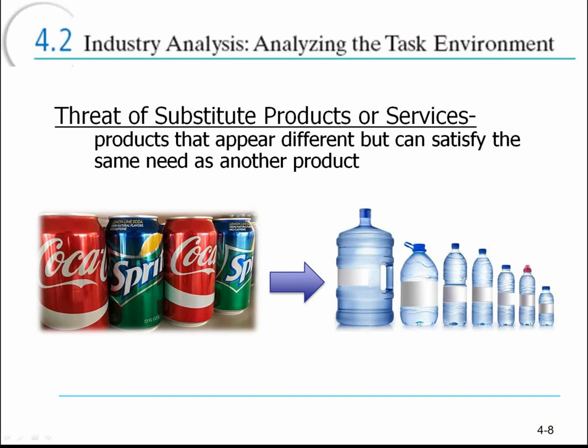Threat of substitute products refers to alternative products that can satisfy the same base need as your product. For example, soda and water: soda quenches thirst and satisfies a sugary craving, but water could satisfy that same base need, making it a substitute product. As a company you want to keep an eye on substitute products — they're not direct competition but they are indirect competition. For example, if you're a restaurant, a grocery store is an indirect competitor because someone could simply go home and cook a meal instead.